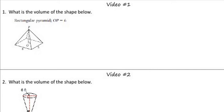So here's our first problem. We're asked to find the volume of this rectangular pyramid. Now if you recall from your exploration, the volume of a pyramid can be found using the formula one-third area of the base, which we denote as capital B, times the perpendicular height.